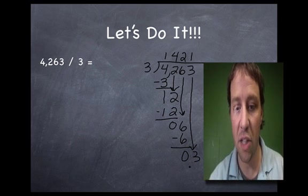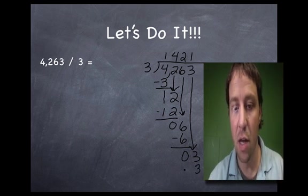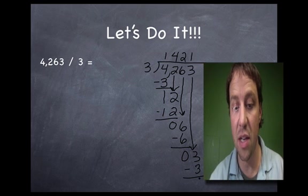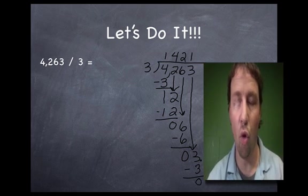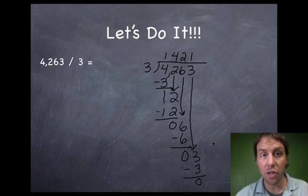How many times does 3 go into 3? One time. 1 times 3 is 3. 3 minus 3 is 0. Let's move my head over. No more numbers. I'm done.